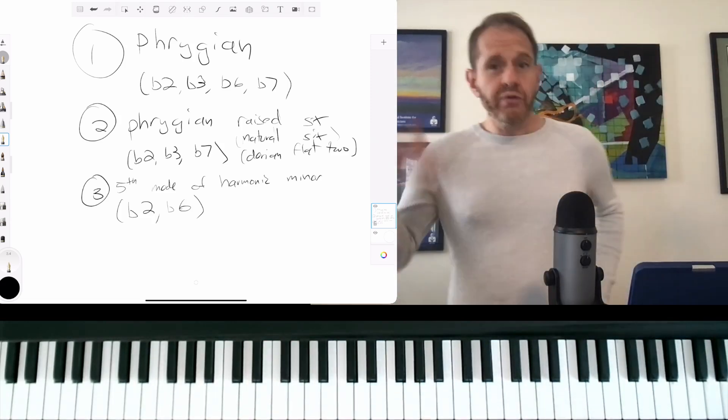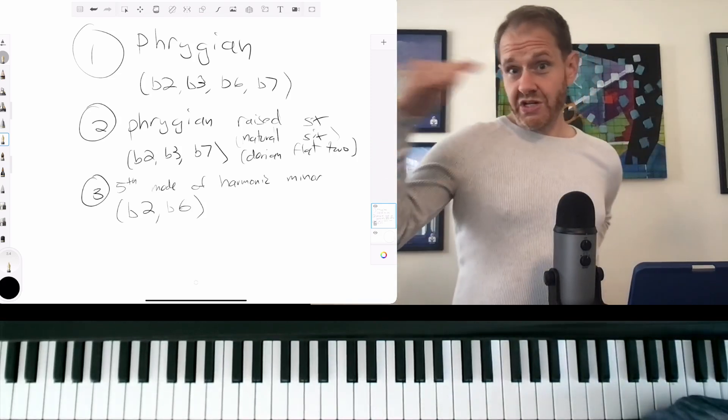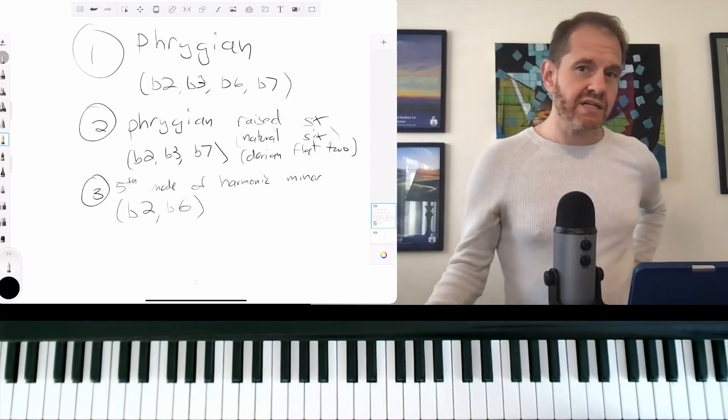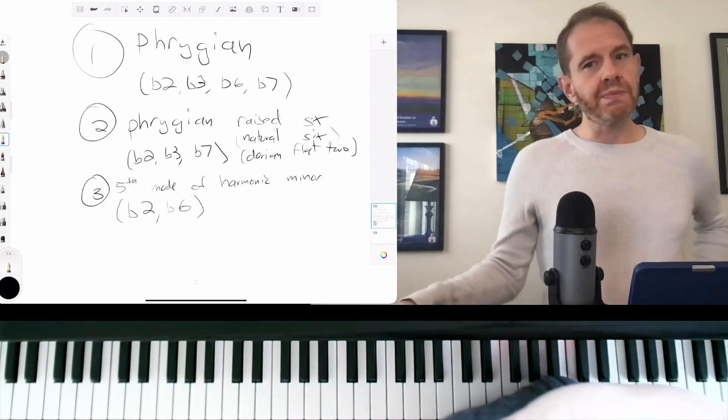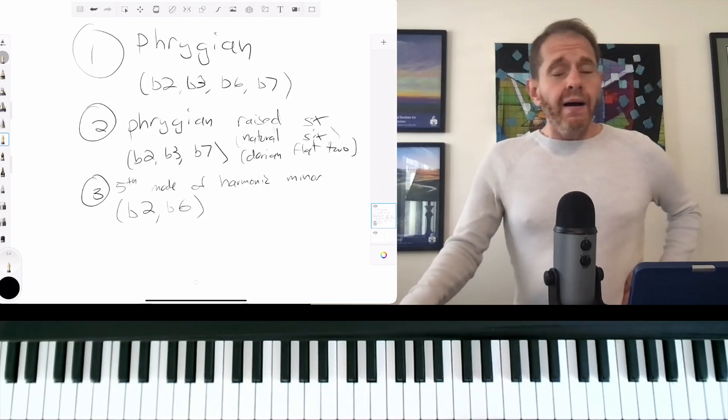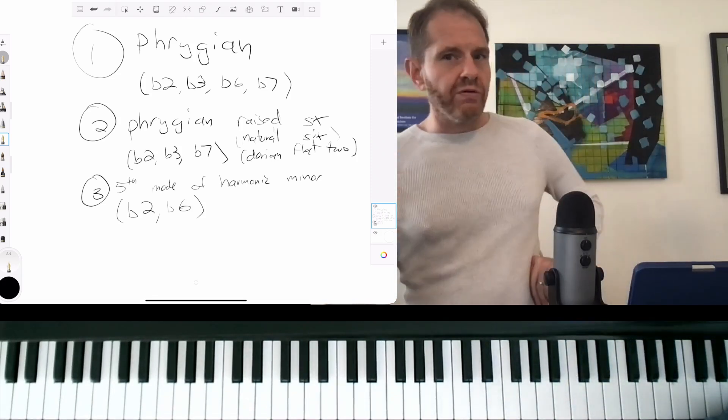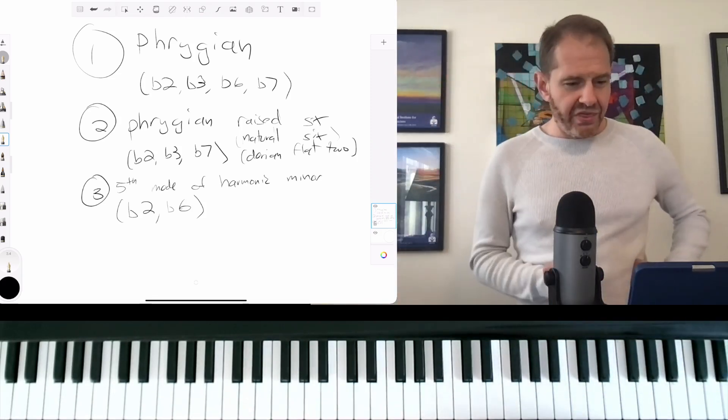So, I would use these in this order. Phrygian as your top choice. Phrygian raised six as your second choice, especially if you're resolving to major. And then, that mode of the harmonic minor does work pretty well. I would use that if you're trying to go for a slightly more tonal thing.